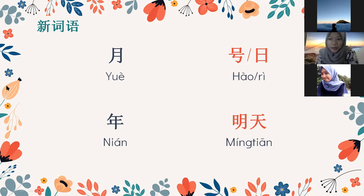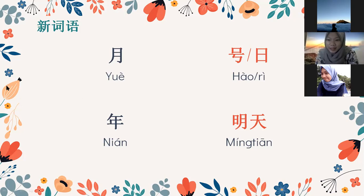Coba Mbak Avi, baca satu kali mulai dari Y sampai MingTian. Y, Hao, R, Nian, MingTian. Yang Hao itu bukan ada tiga ya, ada empat, Hao gitu ya Mbak Afi. Lanjut. Ya, bagus. Selanjutnya.